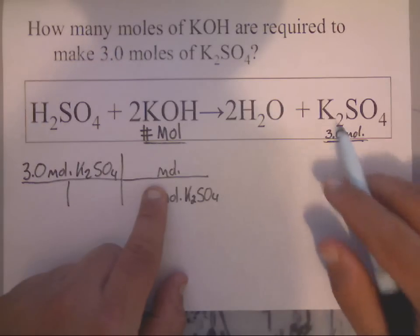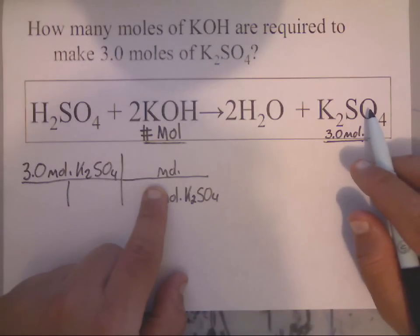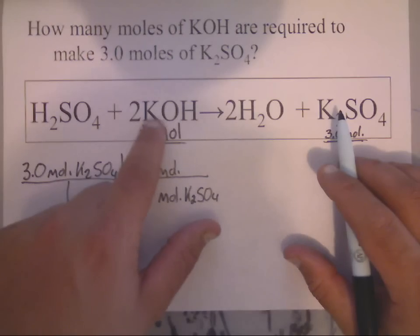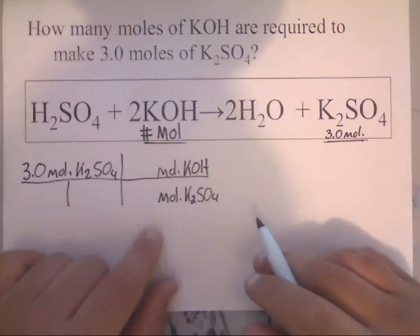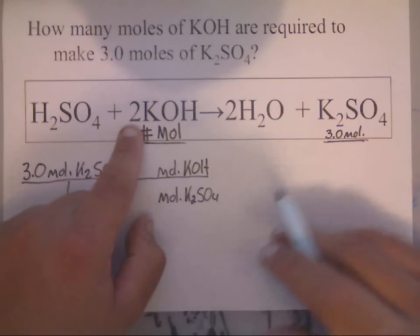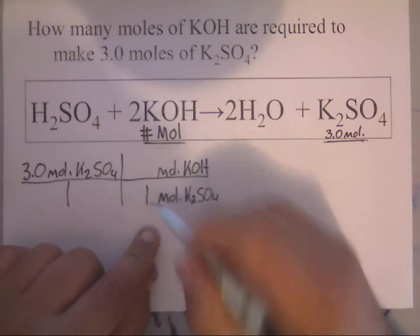Meaning, I can write moles of H₂SO₄ up there, moles of KOH up there, or moles of water up there. I can even write moles of potassium up there, or moles of oxygen up there, but they're not asking me for any of those. They're asking me for this one right here. So, I'm going to write moles of KOH up there.